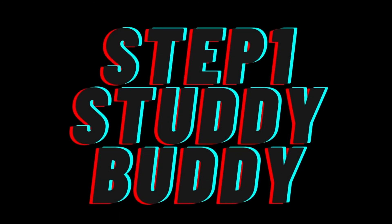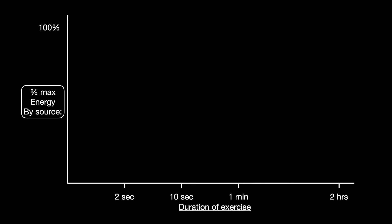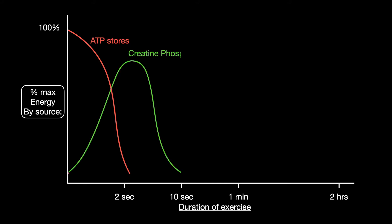Welcome to the Step 1 Review Study Guide. In this lesson, we learn about metabolic fuel use. Under anaerobic conditions, the first thing to go is the stored ATP, and after about 2 seconds, it is used up. Creatine phosphate in the muscles begins to quickly rephosphorylate ADP until about 10 seconds, when it is used up.